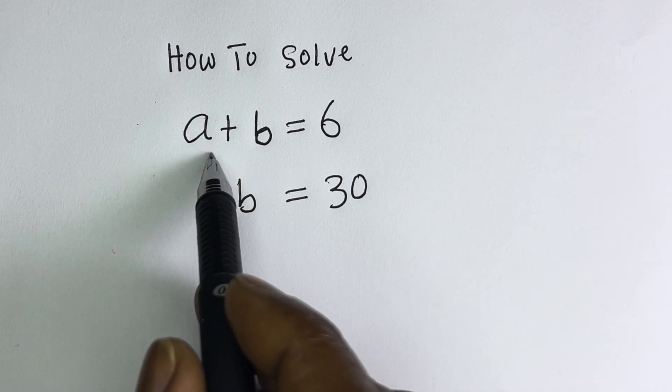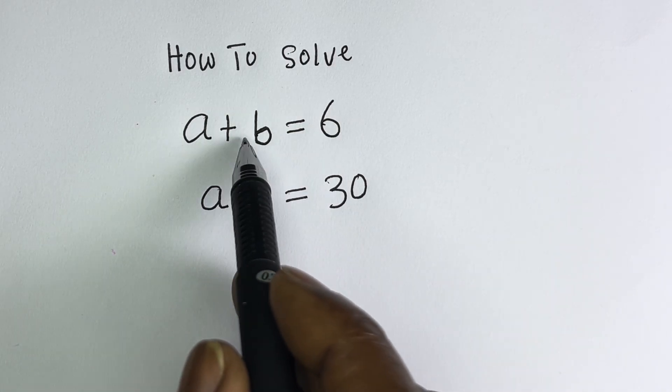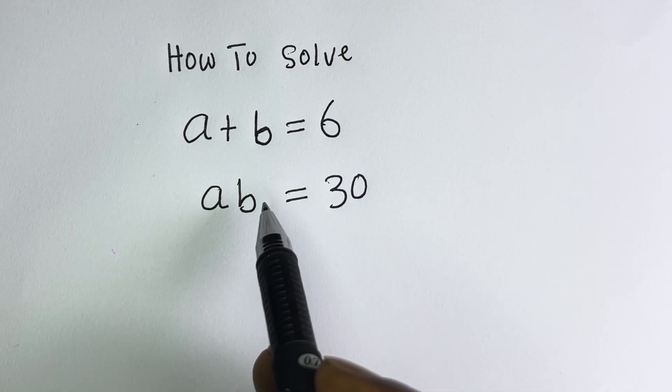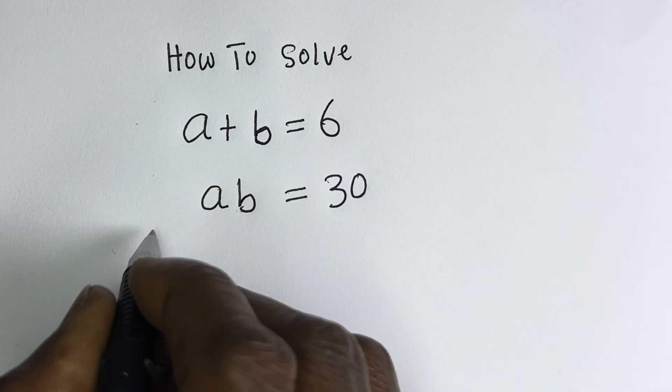Hello. How to solve for A and B in this equation: A plus B is equal to 6, and AB is equal to 30. Solution.